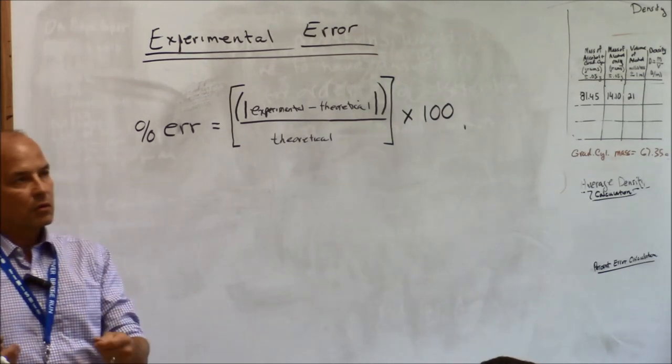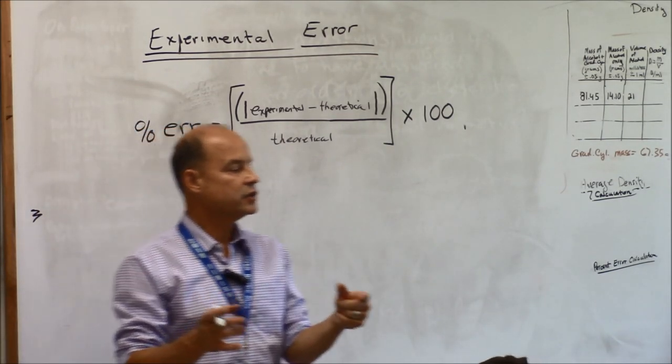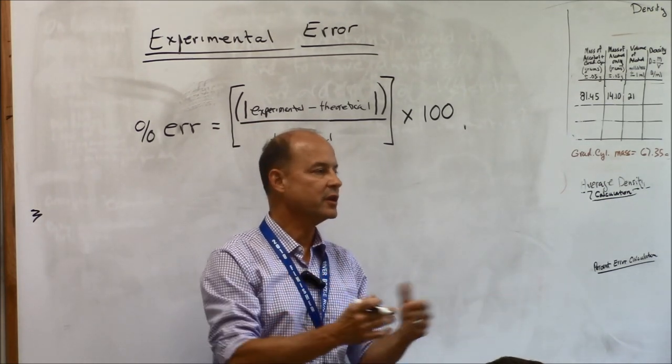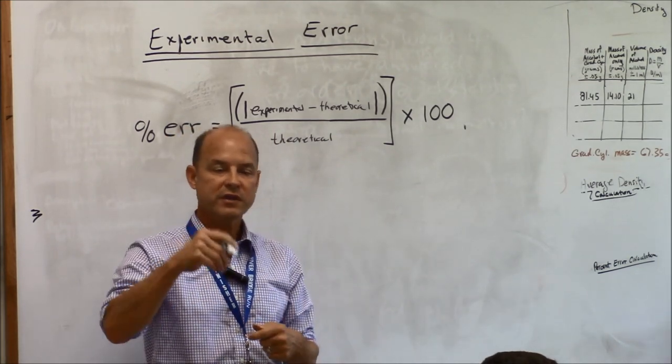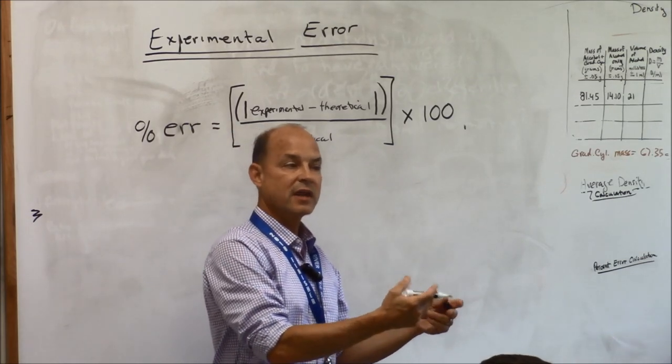Experimental error means that you're comparing what you did in the laboratory to what the known value was. When I say laboratory, I mean what you did in the classroom, right? What you did in the hands-on activity with the cylinder and scale. How does that compare with what a scientist would do in a lab with much more expensive equipment? Did we even come close?